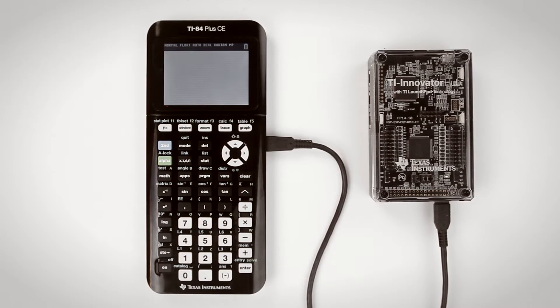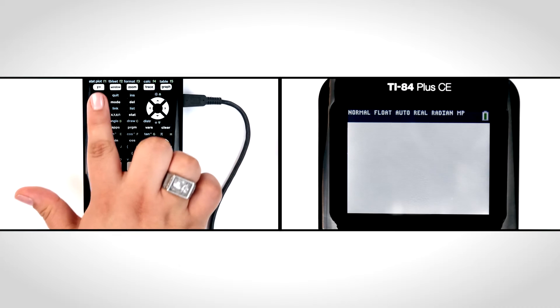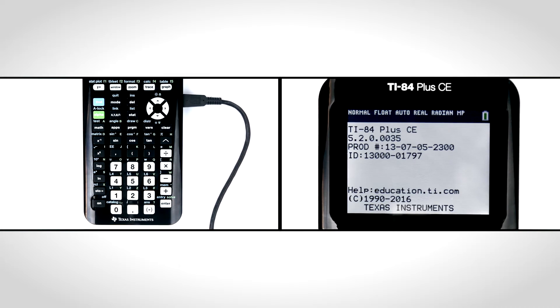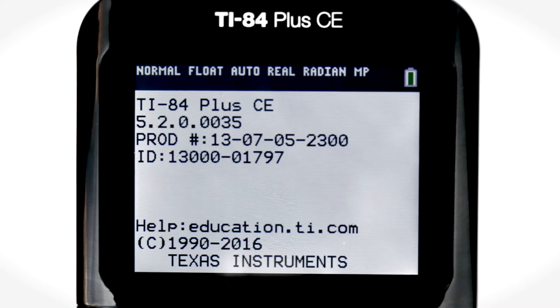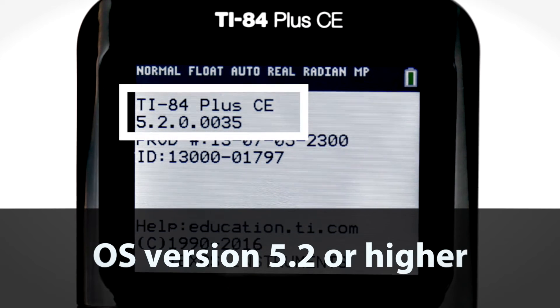Now make sure the calculator operating system is up to date. Press the second key then the plus key to open the memory menu. Press about to open the system specification. You will need to have the TI-84 Plus CE operating system version 5.2 or higher.